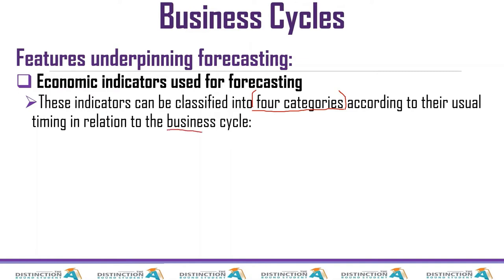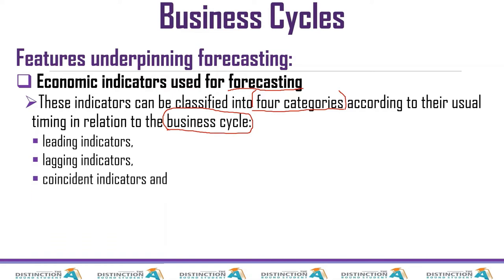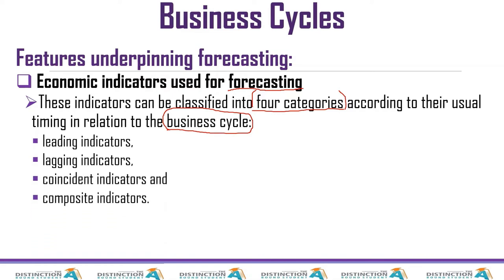We are still on business cycles, which are successive periods of fluctuations in economic activity. Forecasting means to predict — just like weather forecasts tell us what's going to happen tomorrow. In economics, we also do this forecasting. The four categories of indicators, classified according to their timing in relation to the business cycle, are: leading indicators, lagging indicators, coincident indicators, and composite indicators.